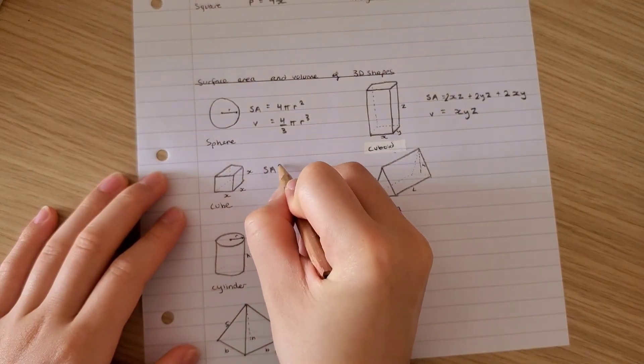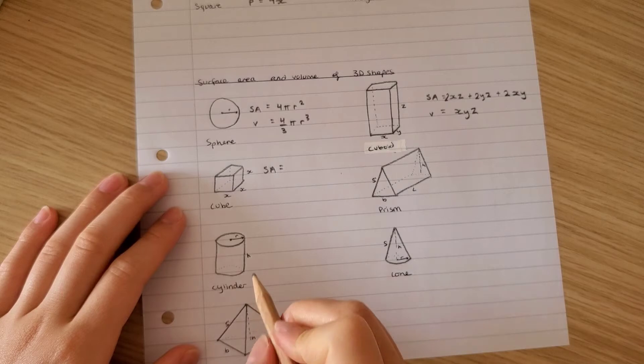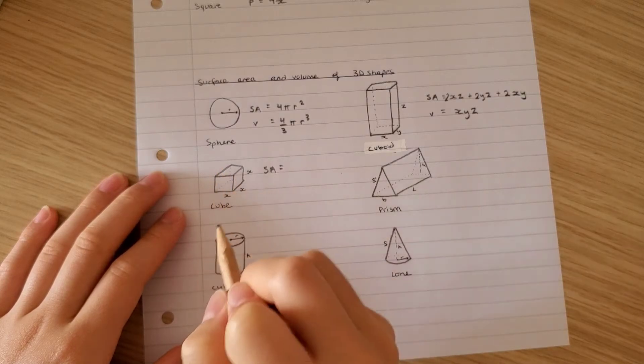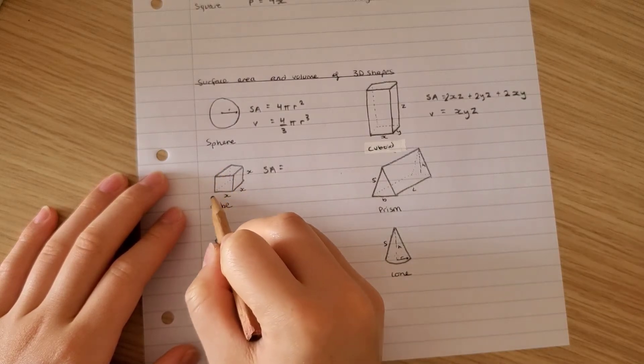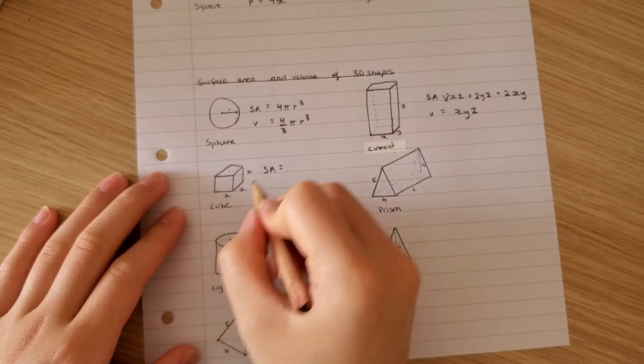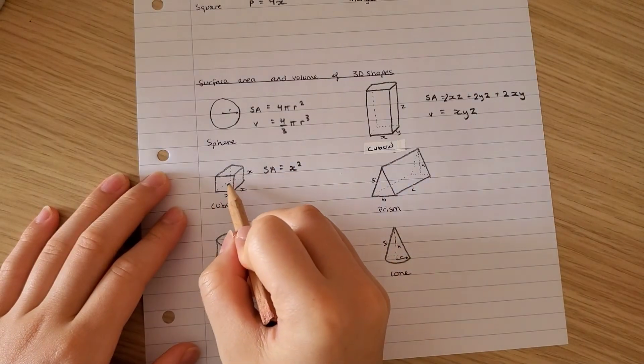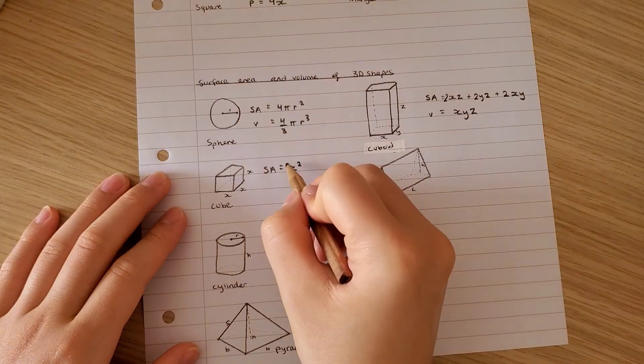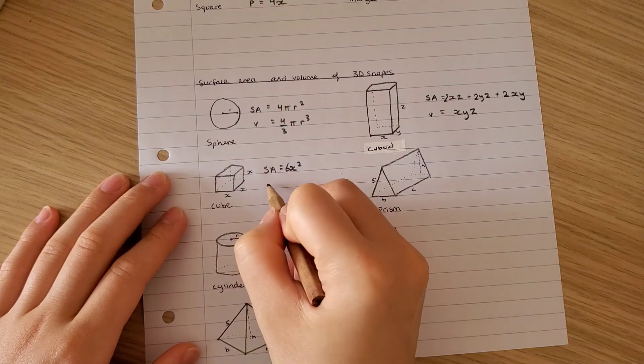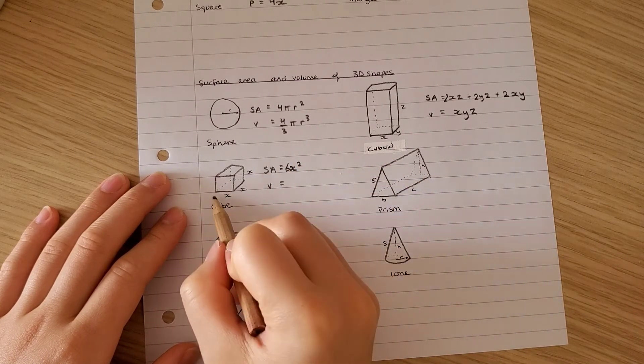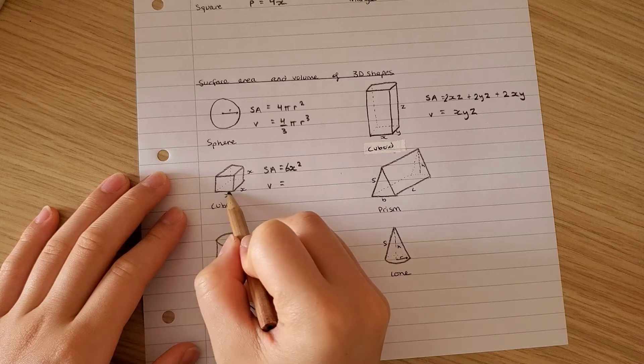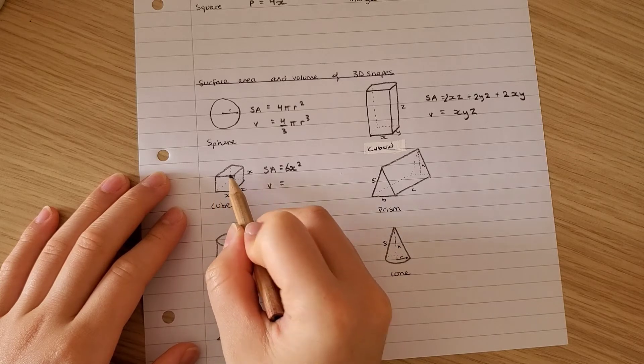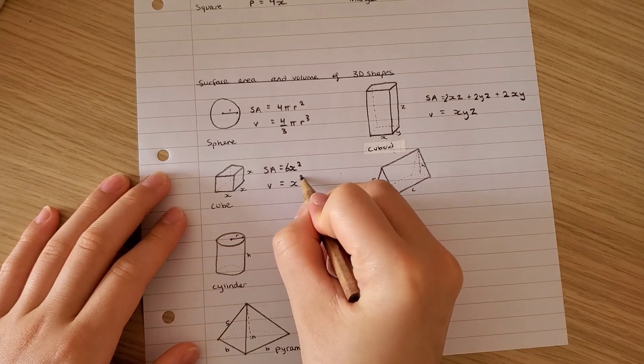The surface area of a cube: you take into account all the faces. The cube has 6 faces and all of the lengths are the same. So you have x squared for this face and you have it 6 times. So that's the surface area. The volume is x times x multiplied by x, so x cubed.